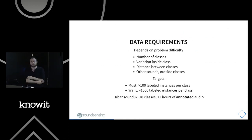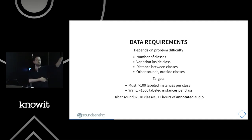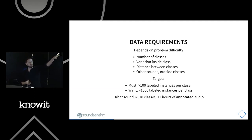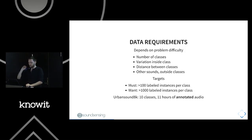Data requirements are one of the most underestimated problems in machine learning. In terms of quantity, you'd generally want at least a thousand labeled instances per class — which is considered a very small dataset today. The Urban Sound dataset has 10 classes, roughly that size — that's 11 hours of annotated audio. Not just 11 hours of sound, but 11 hours of relevant, labeled sound, which probably means collecting 10 to 100 times that amount in total.